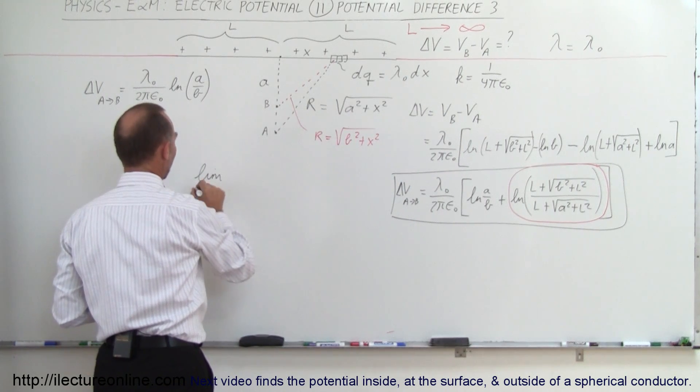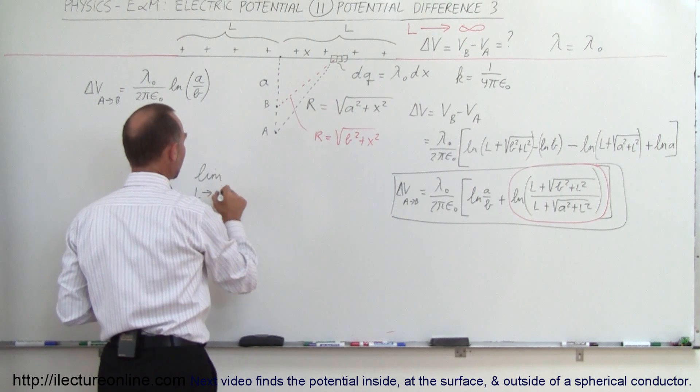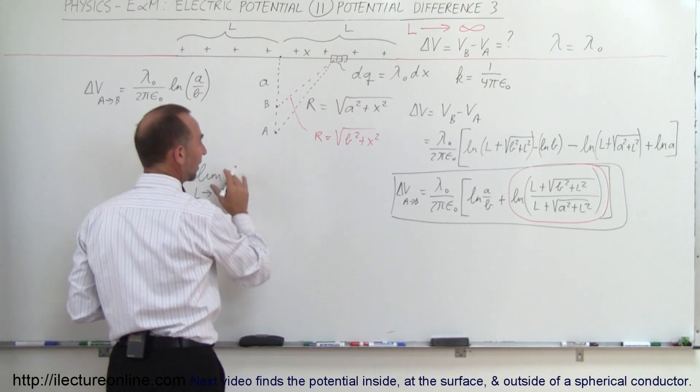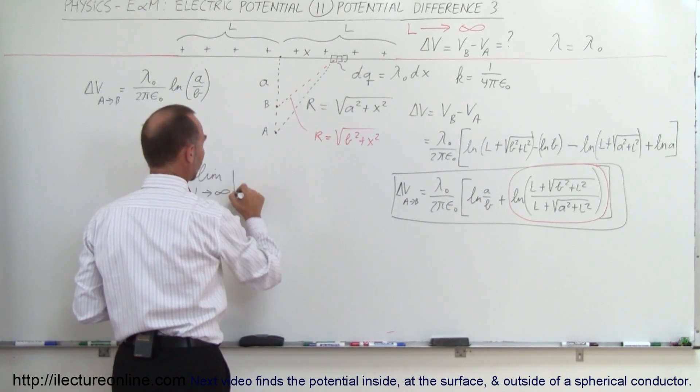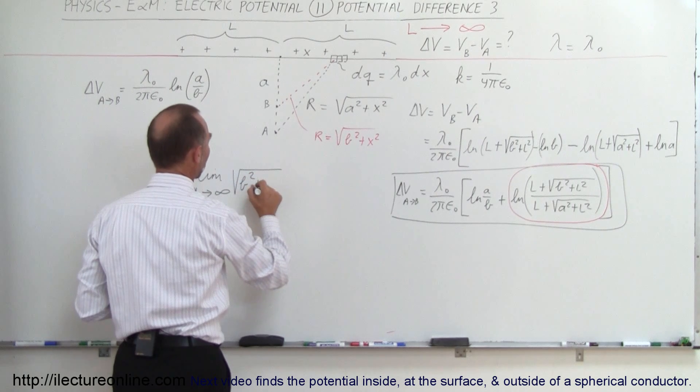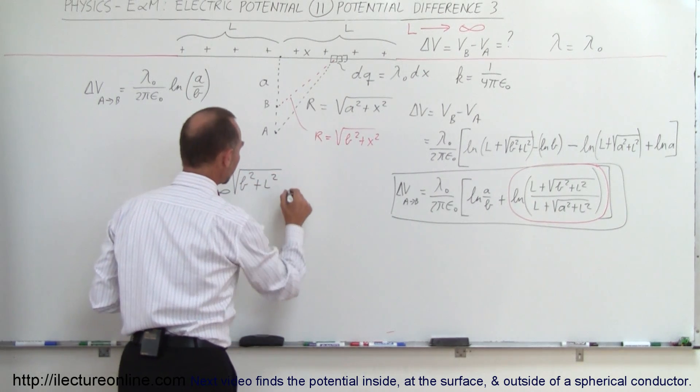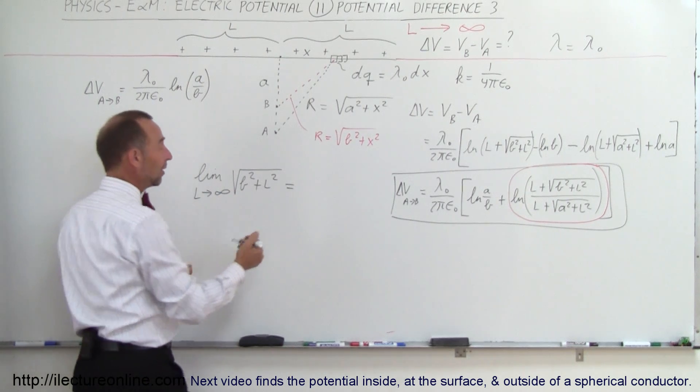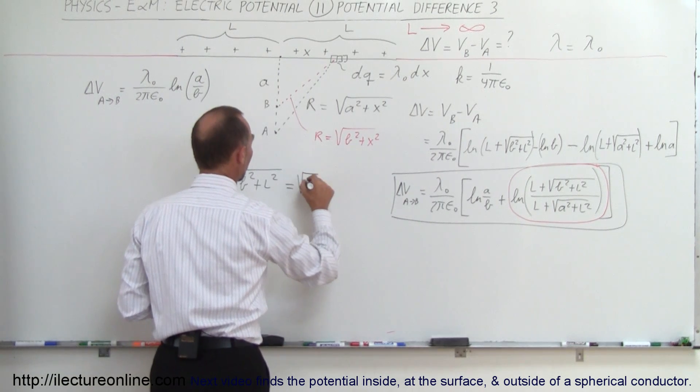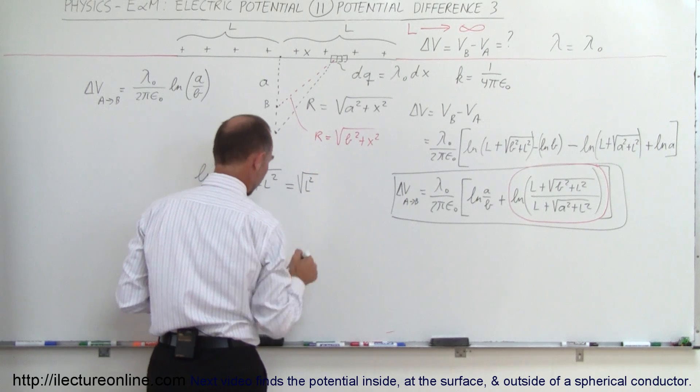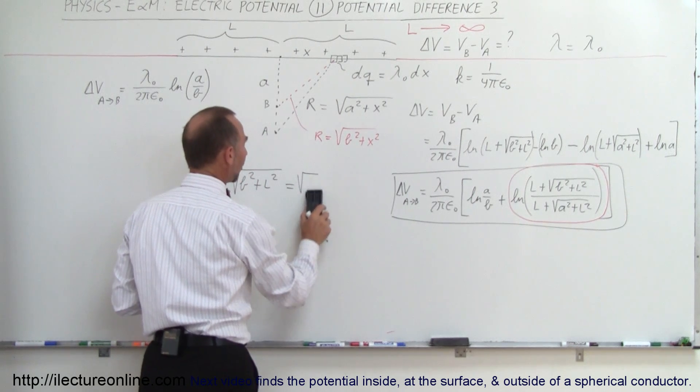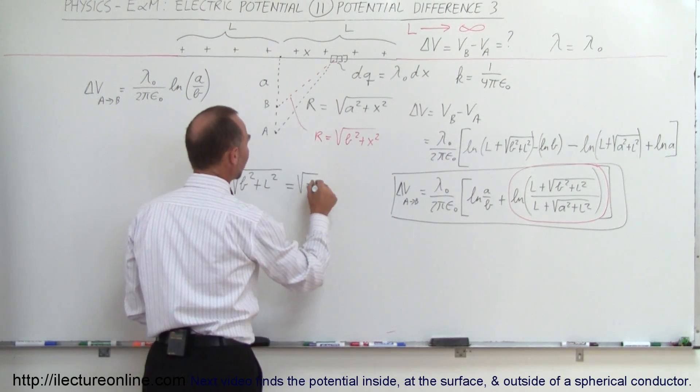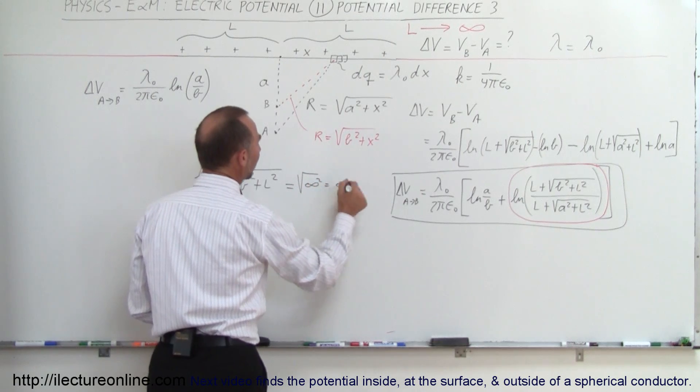We can say that the limit of this quantity right here, which is the square root of B squared plus L squared, will become, as L becomes infinite, B then becomes insignificant, and so this will be equal to the square root of L squared, or better yet, I can go ahead and say that's the square root of infinity squared, which is equal to infinity.